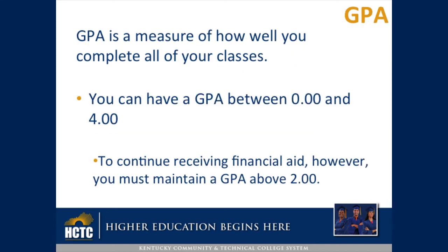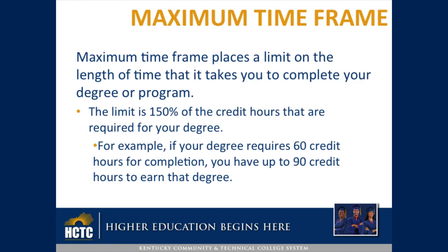GPA is a measure of how well you complete all of your classes. You can have a GPA between 0 and 4.0. To continue receiving financial aid, however, you must maintain a GPA above 2.0.